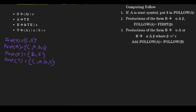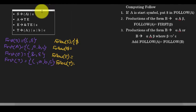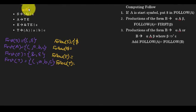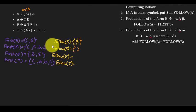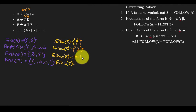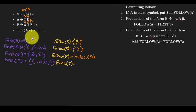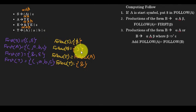Now let's compute the follow sets for the second example. We have a production of the form alpha A beta, so follow of A includes first of beta, which is closing parenthesis. Therefore follow of A includes closing parenthesis. There's also an alpha A form with no beta, so follow of E includes follow of A. For another alpha A beta production, follow of T includes first of E, which is {n} — not epsilon, since epsilon cannot be in a follow set.